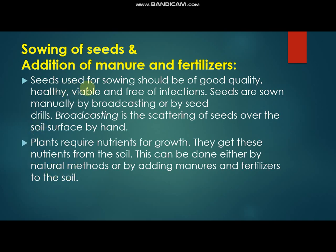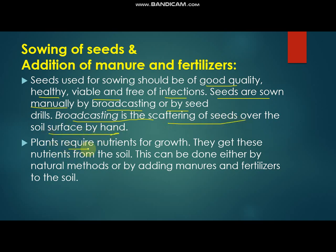Regarding sowing of seeds and adding manure and fertilizer: seeds used for sowing should be good quality, healthy, viable, and free of infection. Seeds are sown manually by broadcasting or by seed drill. Broadcasting is the scattering of seeds over the surface by hand. Plants require nutrients for growth, which they get from the soil — either by natural methods or by adding manure and fertilizer to the soil.